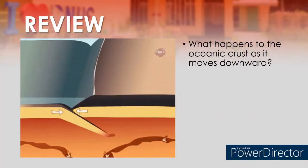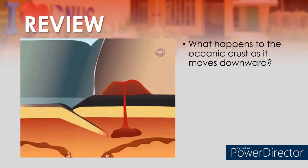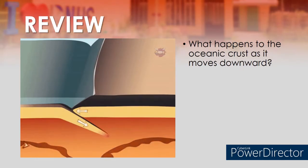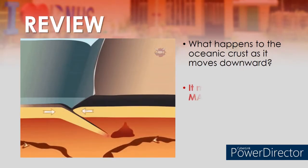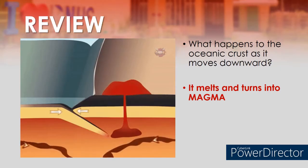Question number three: What happens to the oceanic crust as it moves downward? The answer is that the oceanic crust melts and turns into magma.